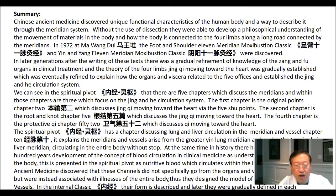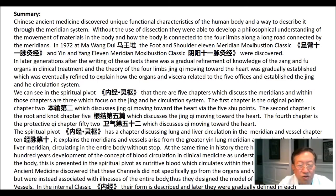In later generations, after the writings of these texts, there was a gradual refinement of knowledge of the zhang and fu organs in clinical treatment, and the theory of the four limbs — jing, qi moving toward the heart — was gradually established, eventually refined to explain how the organs and viscera related to the five offices, establishing the jing and he circulation system. In the spiritual pivot, there are five chapters discussing the meridians; three focus on the jing and he circulation system. The first is original points chapter 2, discussing jing qi moving toward the heart via the five shu points. The second is root and not chapter 5, and the fourth is protective qi chapter 52.